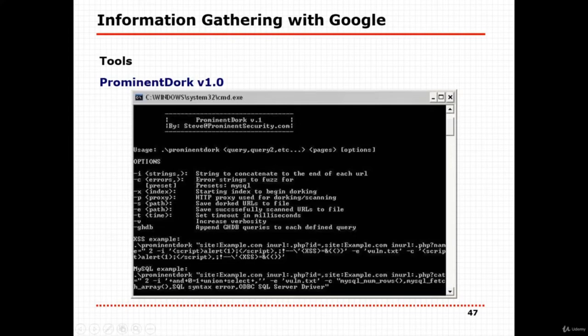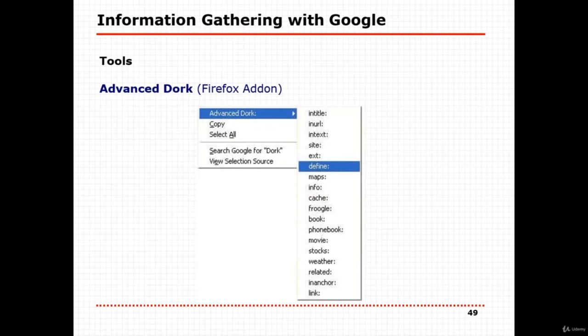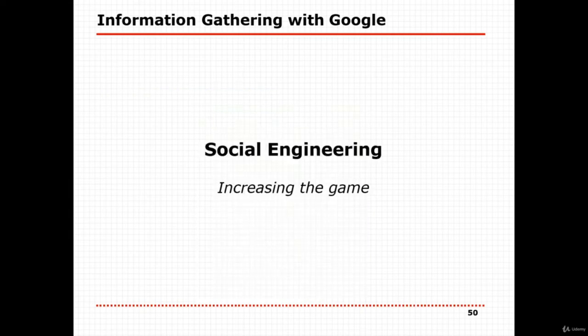ProminentDork looks like a CLI command-line tool. There are also Firefox and advanced dork extensions. If you want a Chrome extension, search for 'dorks for Chrome extension' and you'll get a lot of information gathering tools that way. Next we'll cover social engineering — but before that, I'll show you the first website in the next session.